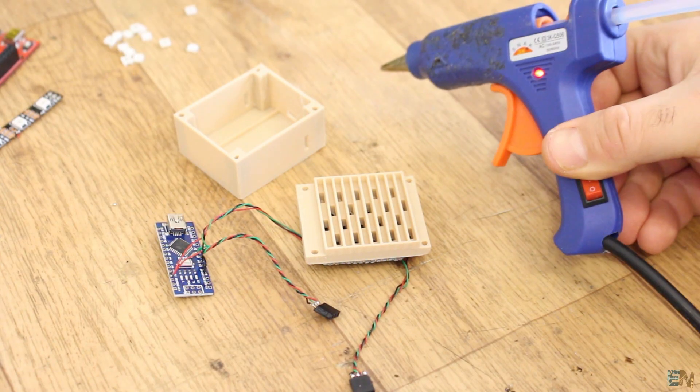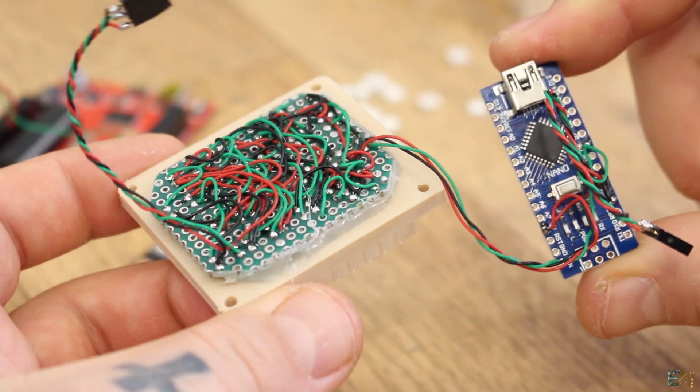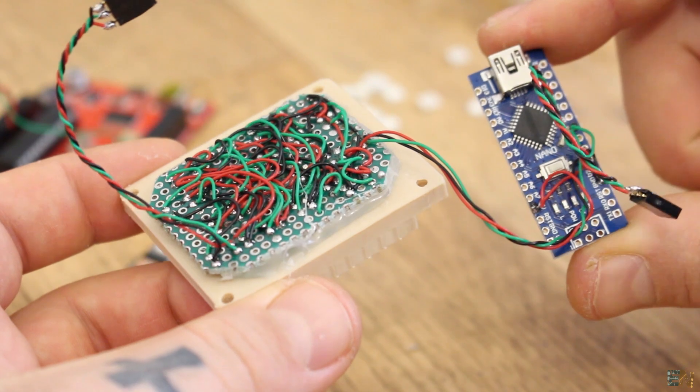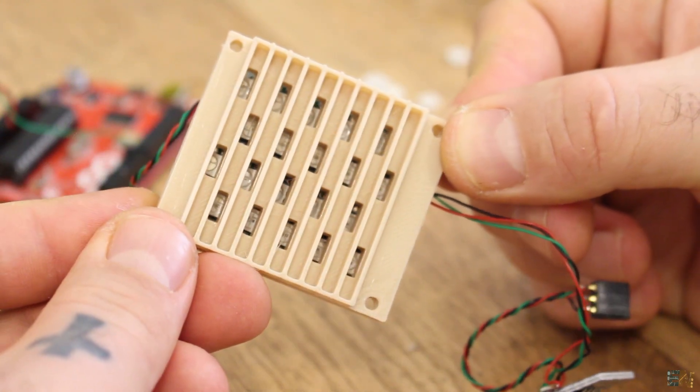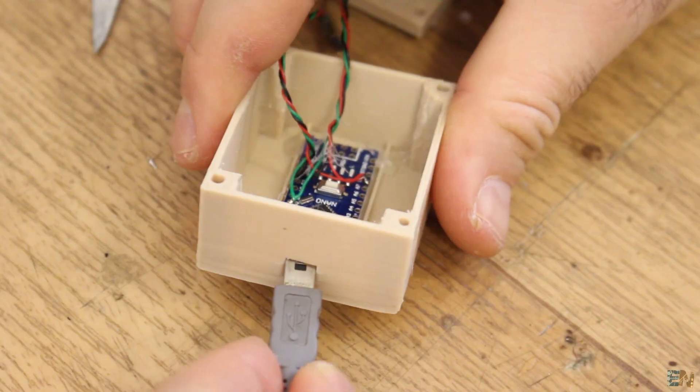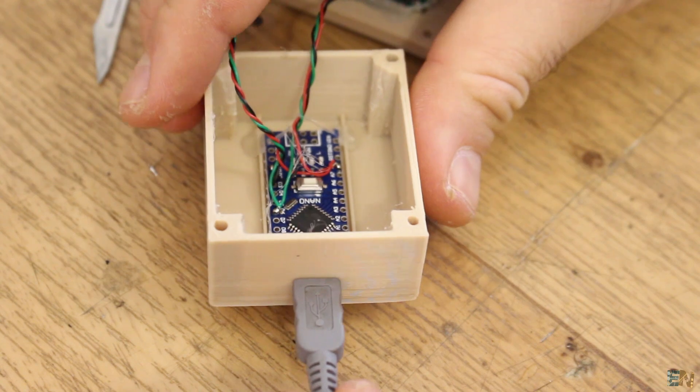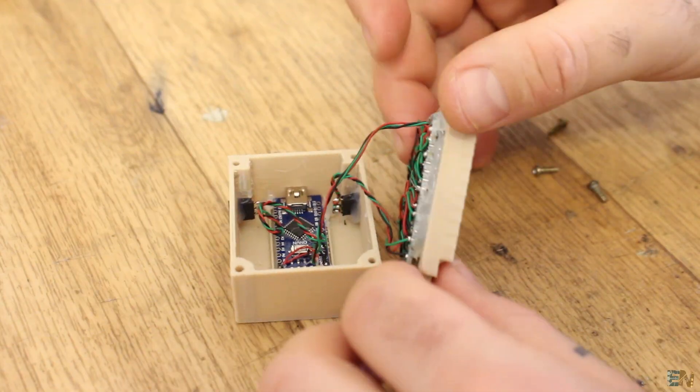Now we glue the LED's board on the back of the 3D printed part. I use some hot glue to do that. Also make sure that the LEDs are pretty much in front of the holes of the printed part. Now we can glue the Arduino inside of the case and make sure that the USB connector is in front of the back hole. We also glue the female pins on the side of the case.